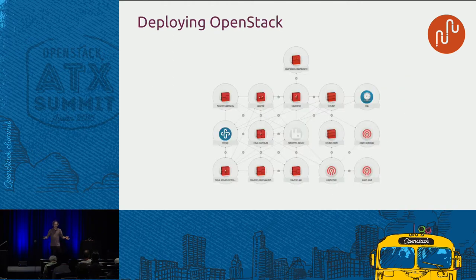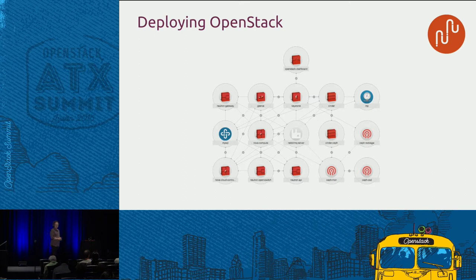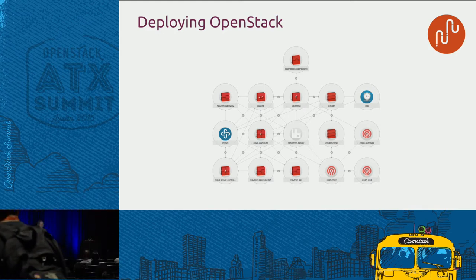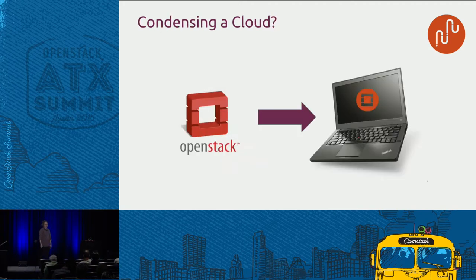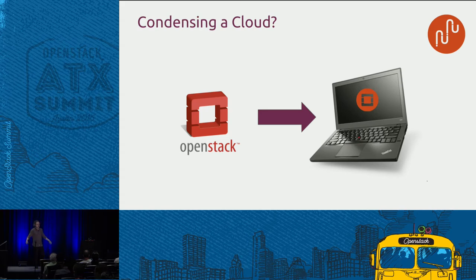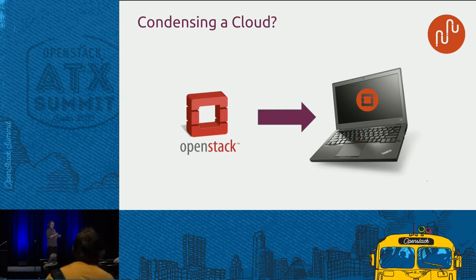This is what an OpenStack model looks like in Juju — all the various different components: dashboard, database, messaging. I've got some Ceph in there as well for block storage. We can apply things like NTP on top of that to make sure we have consistent time. All the relations between them — we can encapsulate this thing in a model and then take that and deploy it onto hardware. But how do we condense a cloud? How do we take all those things we find great and use every day to deploy on server hardware, and do it on a laptop? How do we take all those modeling concepts and test them on a regular basis?